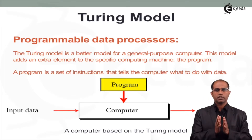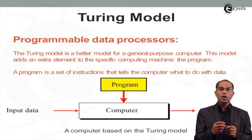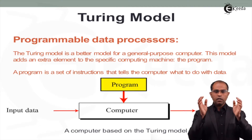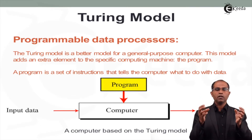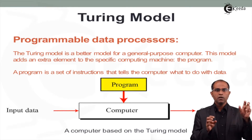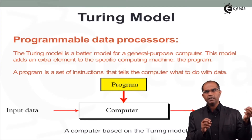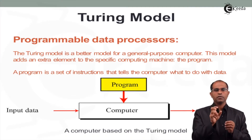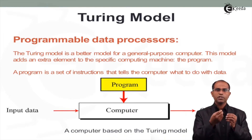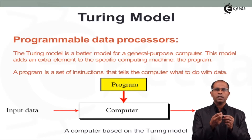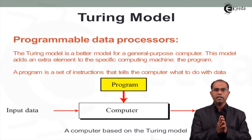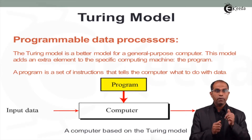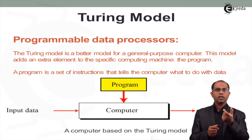A Turing model is a better model for a general-purpose computer. This model adds an additional element called a program. A program is a set of instructions which tells what to be done on the data. So a computer is now thought of as three blocks: an input block, a program or data processor block, and an output block.